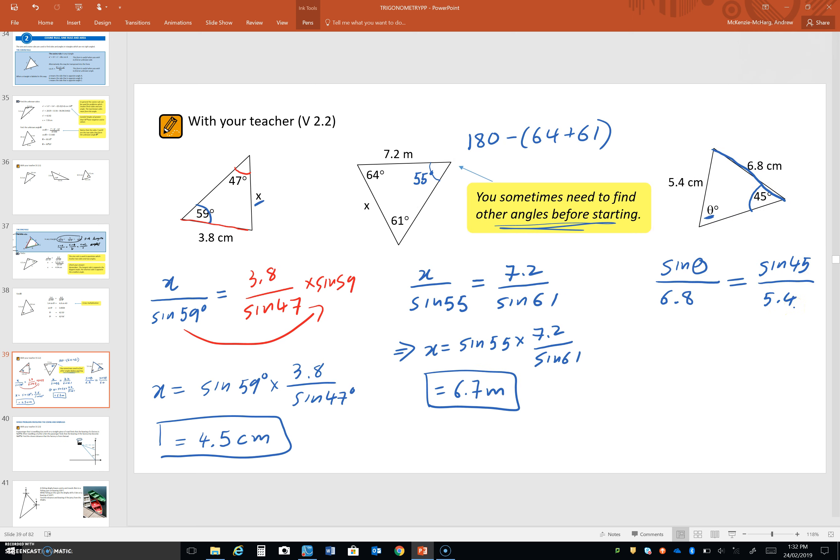Okay, now, the rearranging here is a little, tiny bit more involved than the other two. Not much, though. So, firstly, the 6.8 is dividing on this side. So, that will go and multiply on the other side.